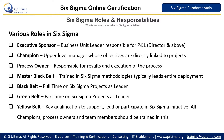Yellow Belts are all other people in the organization who have qualifications to lead or participate in a Six Sigma initiative. In fact, all champions, process owners, and team members should be trained in this. A team member can be, and preferably should be, a Yellow Belt, and supports all the roles given in the project.